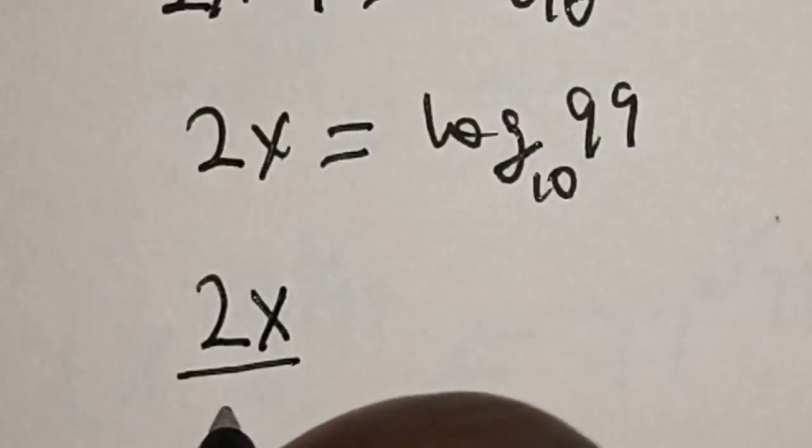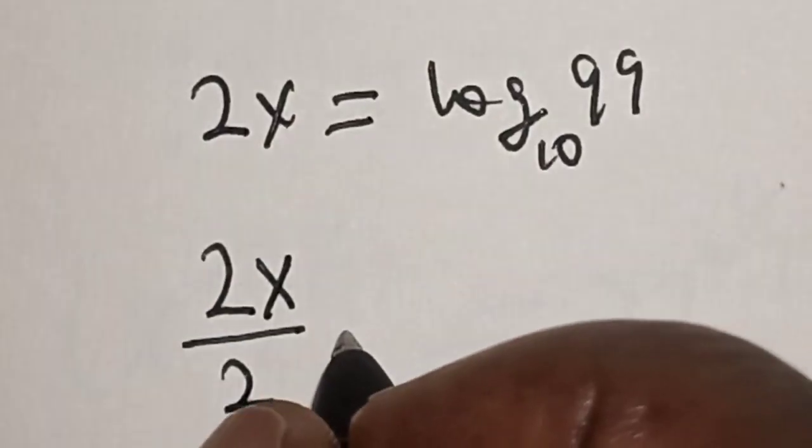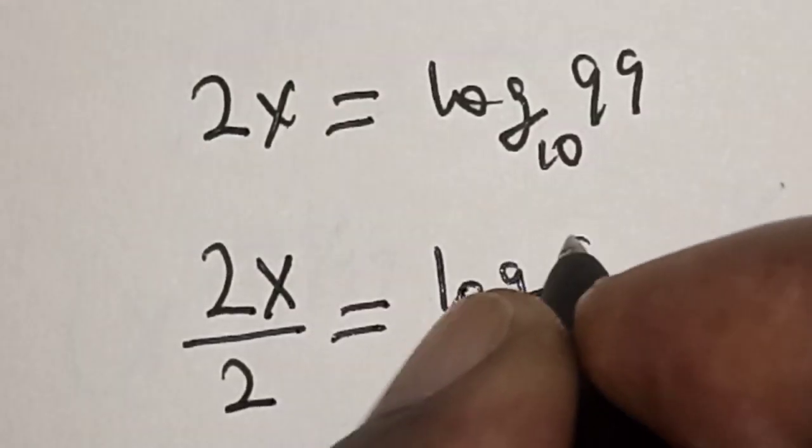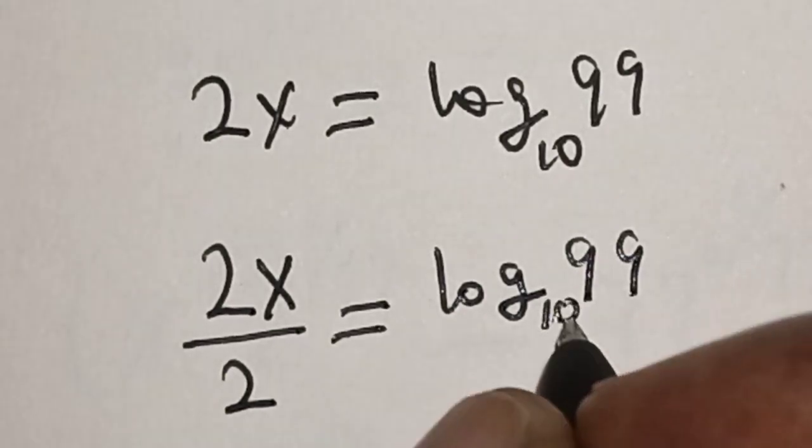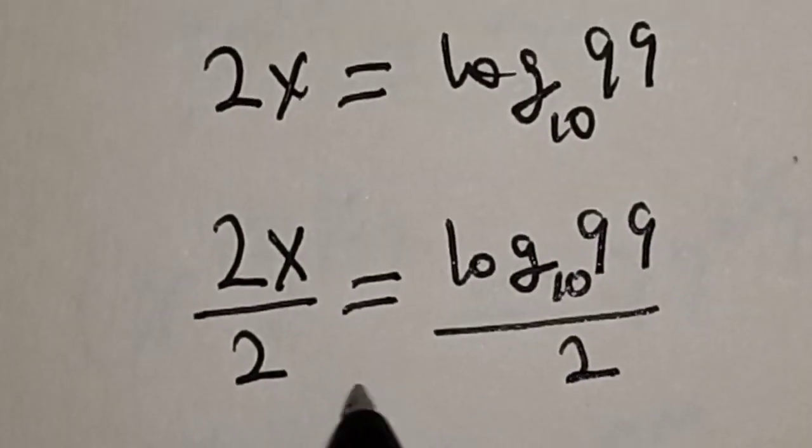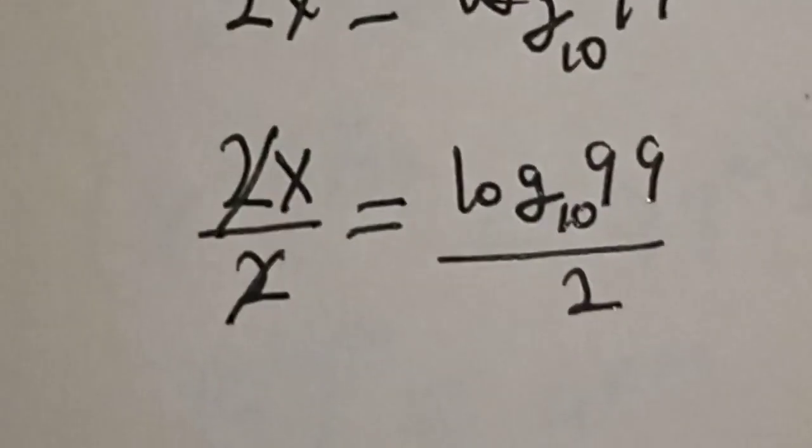2x divided by 2 is equal to log 99 base 10 divided by 2. The 2s cancel. Therefore,